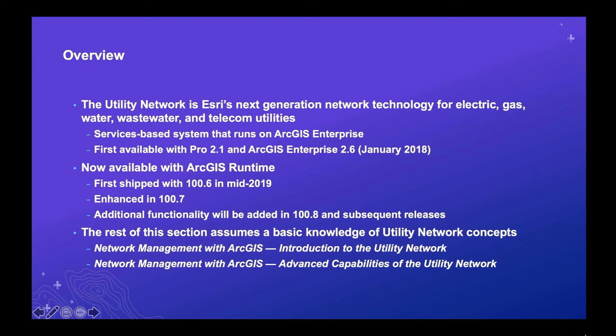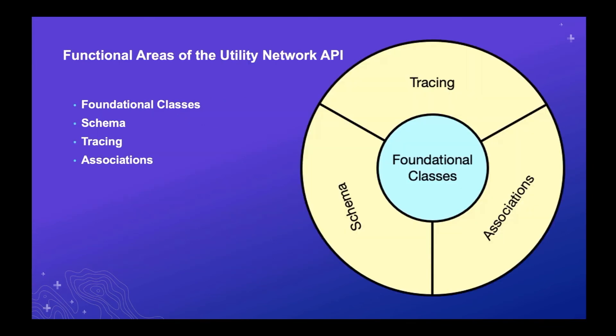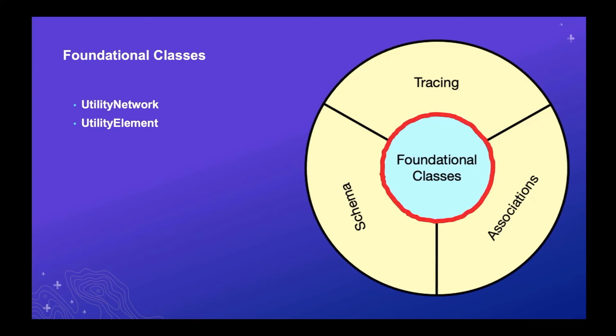The rest of this talk assumes you have a basic knowledge of utility network concepts. If you don't, there are a couple of other Dev Summit sessions you might want to view first. The utility network API is broken up into four areas: foundational classes, and then classes around schema, tracing, and associations. We're going to talk about each one of those in turn.